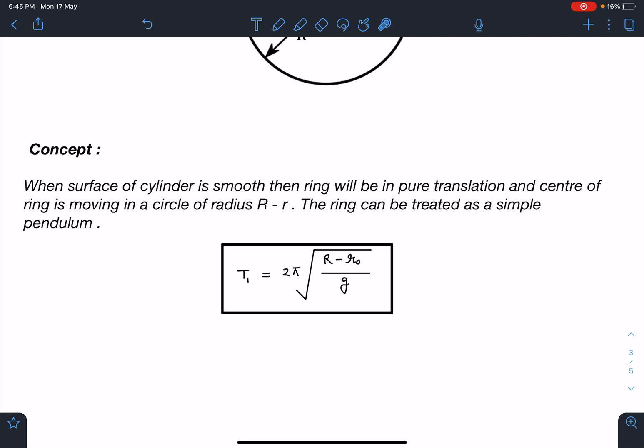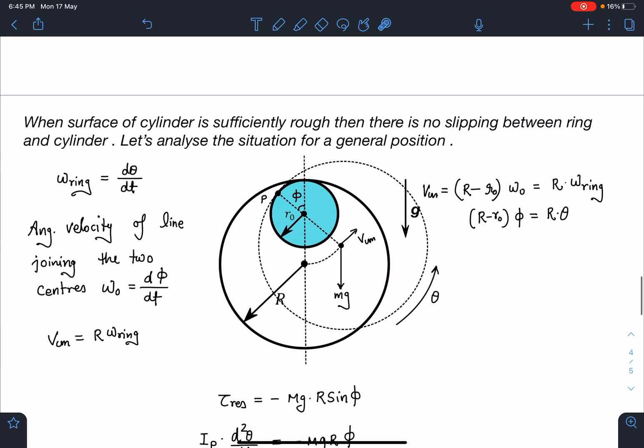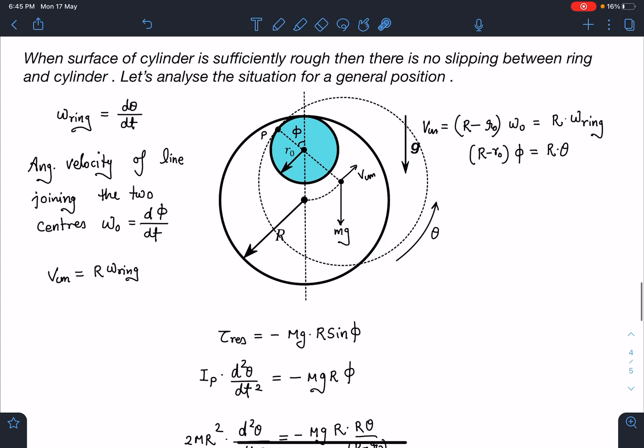I am not doing the working. So please remember this trick. Wherever you see such situations, you can always use this as a simple pendulum. Earlier also I have used this and in this problem again I am using. So T1 value is 2π√(R - R0)/g. So the second part here is slightly tricky and challenging also.